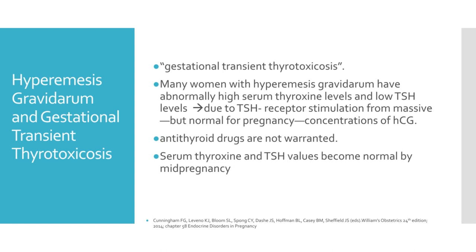Transient biochemical features of hyperthyroidism may be observed in 2-15% of women in early pregnancy. Many women with hyperemesis gravidarum have abnormally high serum thyroxine levels and low TSH levels. This results from TSH receptor stimulation from massive but normal for pregnancy concentrations of HCG. This transient condition is also termed gestational transient thyrotoxicosis. Even if associated with hyperemesis, antithyroid drugs are not warranted. Serum thyroxine and TSH values usually become normal by mid-pregnancy.